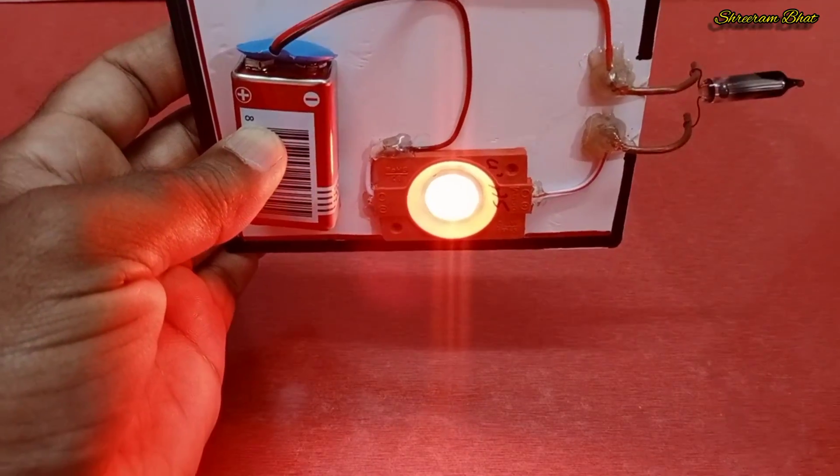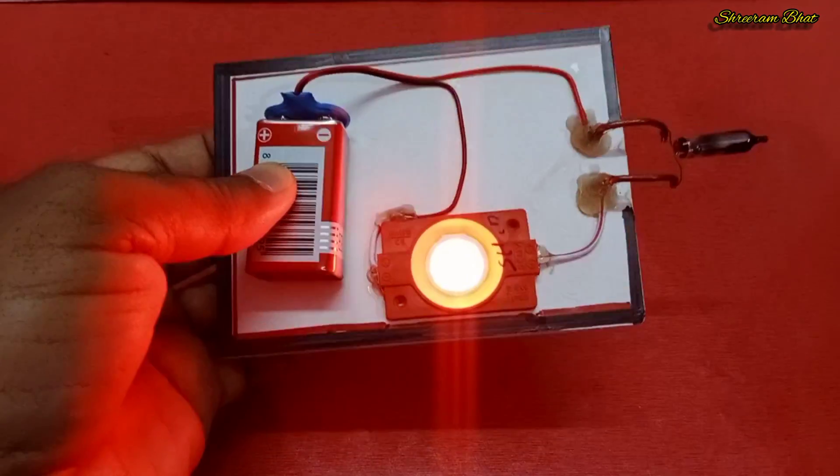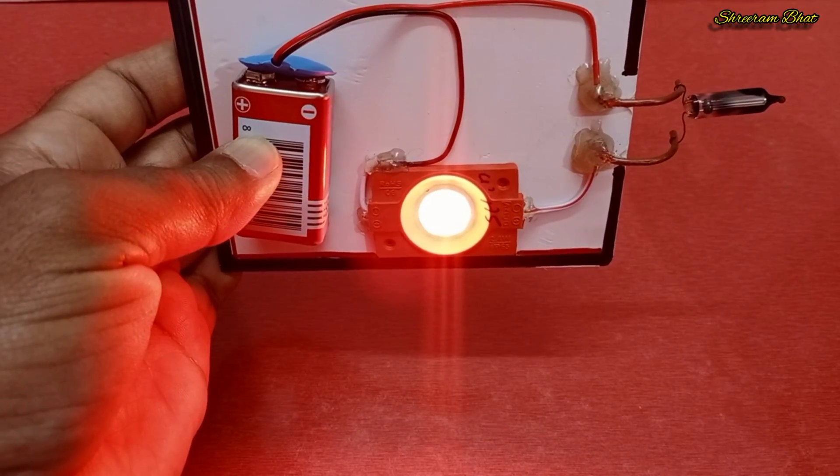When it is cooled, it will break the circuit by bending in the opposite direction.